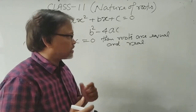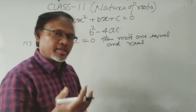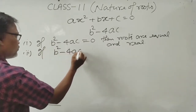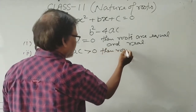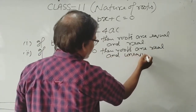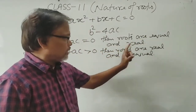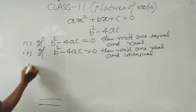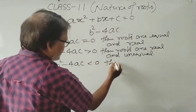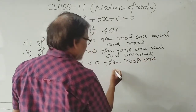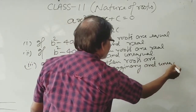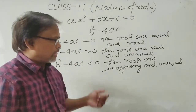I will explain in detail the different things that you have not read in class 10. The second condition, which you have also read: if B² - 4AC > 0, then roots are real and unequal. The third condition: if B² - 4AC < 0, then roots are imaginary and unequal. These are the three conditions you have already read.